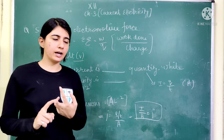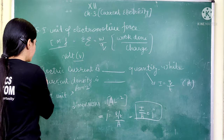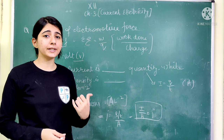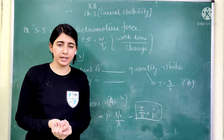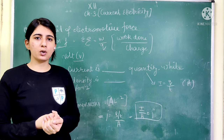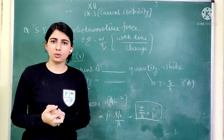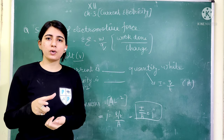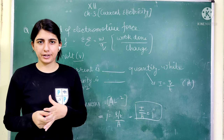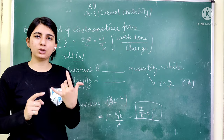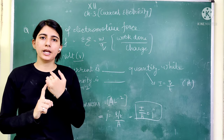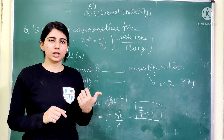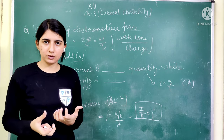The question is: what are electric current and current density, and what type of quantity are they? We have physical quantities which we can measure. There are two types — scalar and vector. There are also fundamental and derived units, but our focus is on whether these quantities are scalar or vector.